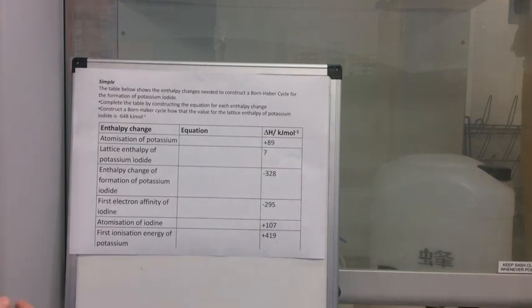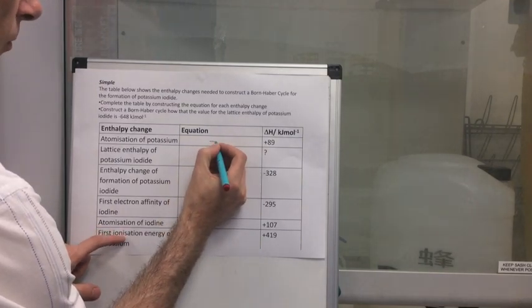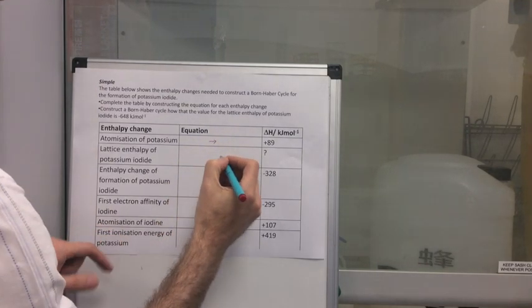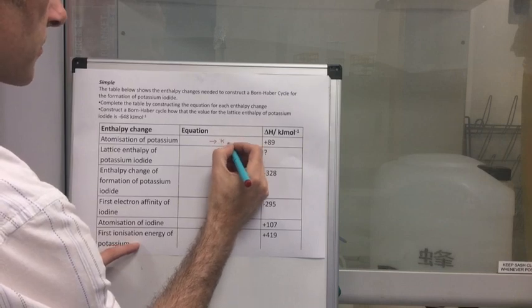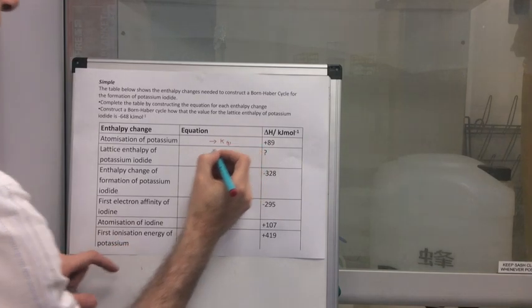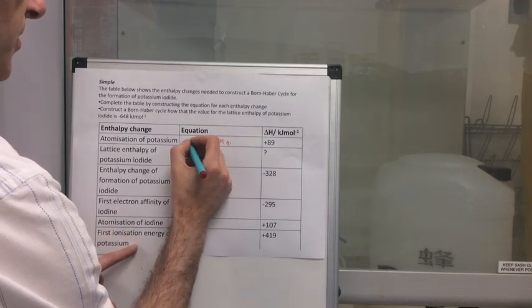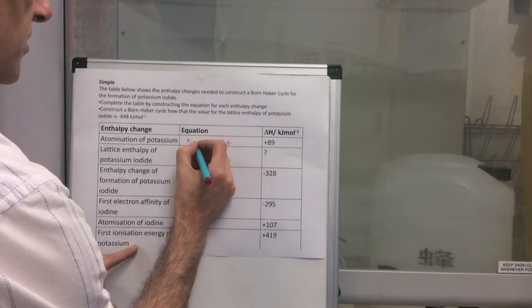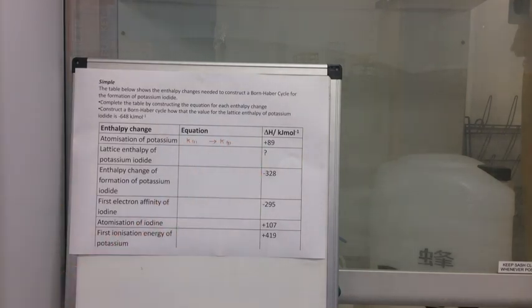The atomisation of potassium. If you remember the definition, it's the enthalpy change when one mole of gaseous atoms, so it will be K gas, is formed from the element in its standard state. So potassium is obviously a solid under standard conditions and that balances, so that's the equation.